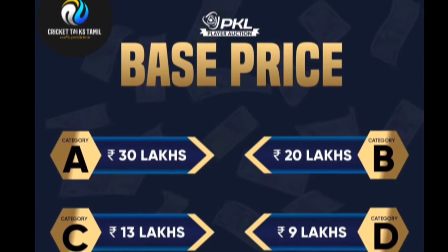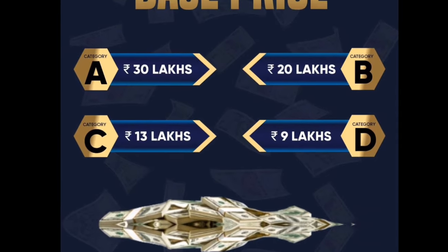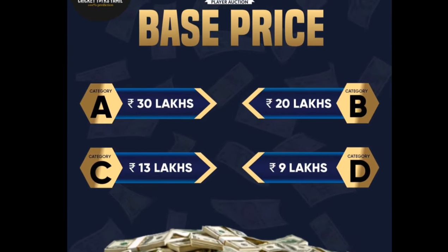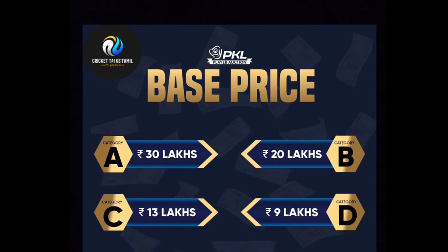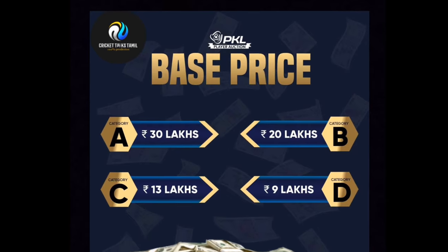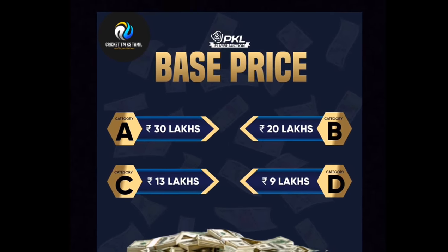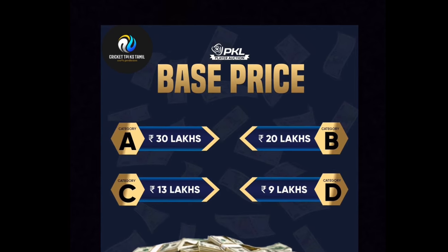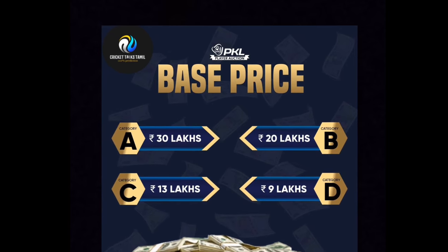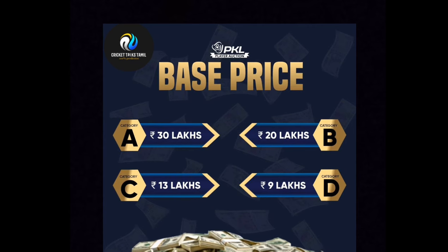How many players are categorized in the auction? So, in a team, you have categories like A, B, C, and D. In the auction, you have a list of players. You also have a list of uncategorized players. So, in categories A, B, C, D, in the case of a player, you have a salary cap and you have to go to the auction.